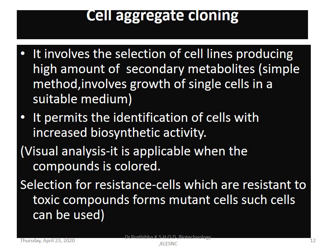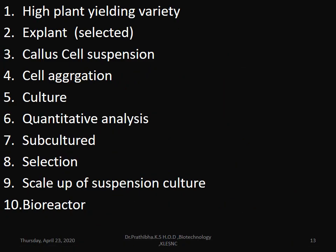Visual analysis is applicable when the compound is colored. Selection for resistance means the cells which are resistant to toxic compounds form mutant cells that can be used. For the production of secondary metabolites, first one has to select a high-yielding plant variety, then select the explant, followed by callus formation, cell suspension, cell aggregation, culturing system, quantitative analysis, subculture, selection of good subculture cells, scale-up of suspension culture, and finally scale-up in a bioreactor for large-scale production.